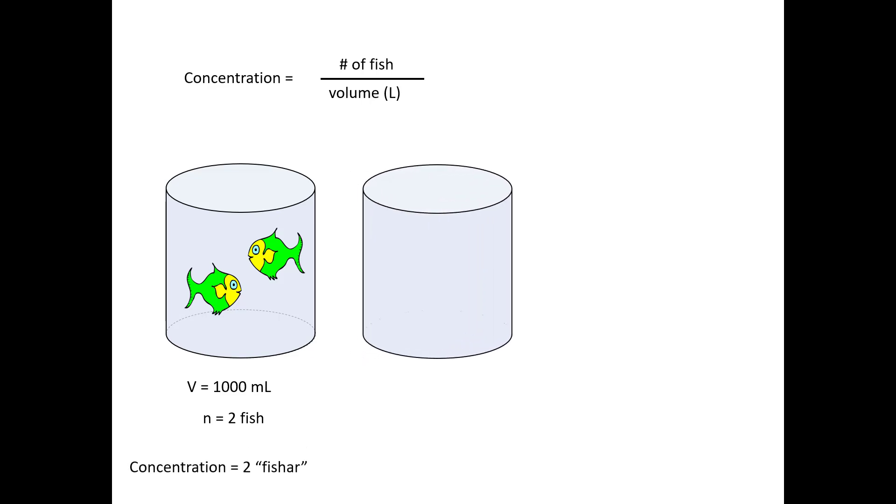Now I'm going to take a second fish tank, evidently I really like fish, and into that fish tank I'm going to put four fish. So in this case I've got four fish per liter. This tank is also 1,000 milliliters, which means my concentration now would be four divided by one liter. That would give me a four fishar solution.